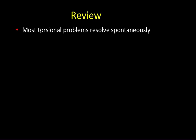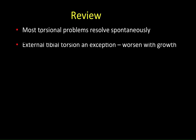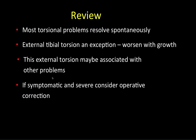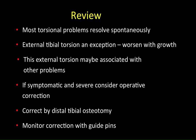This is the goal of correction. In review: most torsional problems get better spontaneously and most are internal. External tibial torsion is a real exception — it worsens with growth because of its natural history, and it is sometimes associated with other problems in the limb. If symptomatic and severe, one can consider operative correction, which should be done by a tibial osteotomy performed distally and carefully monitored so that you get the right amount of correction.